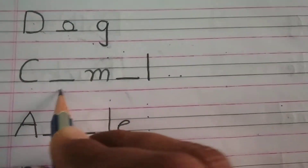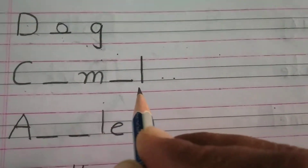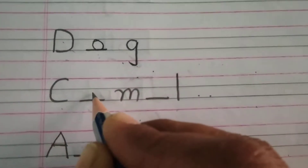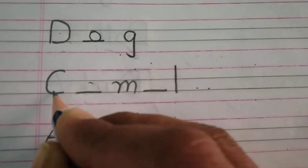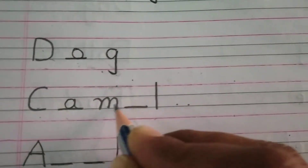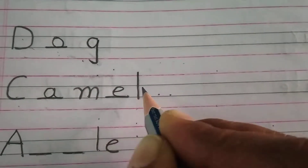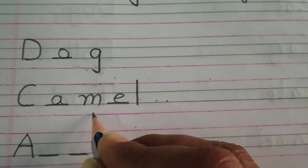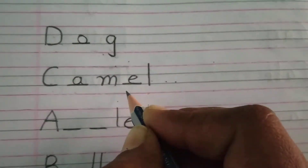Now C dash M dash L — C for camel, C A M E L — camel.